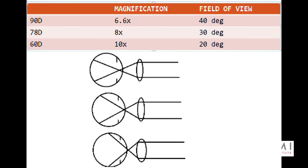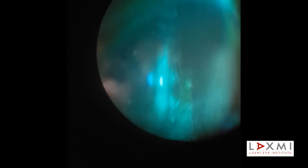For a 90 diopter lens, magnification is 6.6x with a 40-degree field of view, whereas for a 78 diopter lens, magnification is 8x with a 30-degree field of view. A red-free filter can be used for better contrast between retinal vessels and the underlying background, and also to detect early losses of nerve fiber layer for suspected glaucoma.